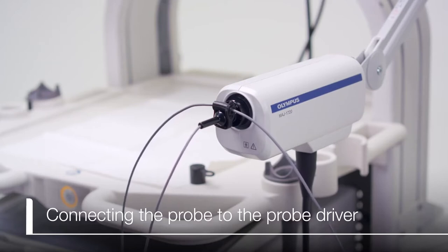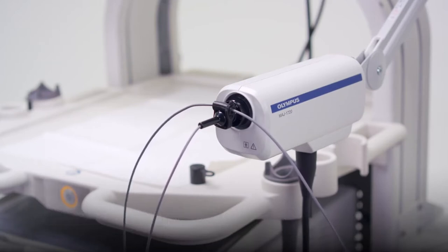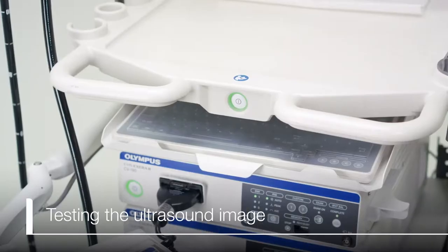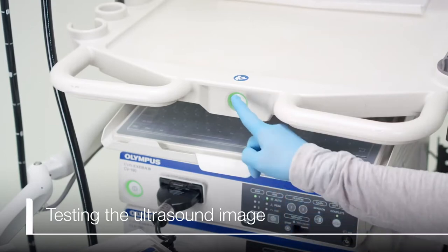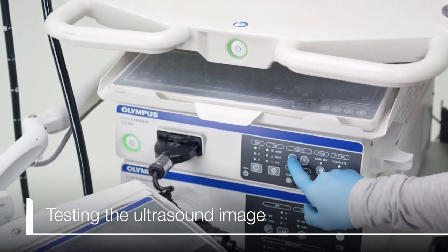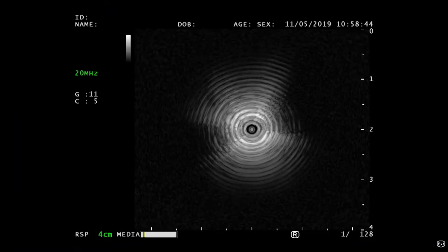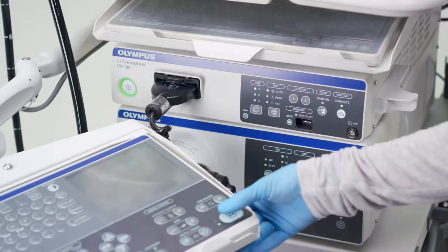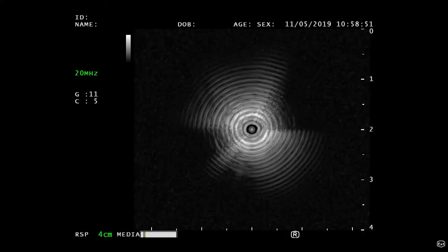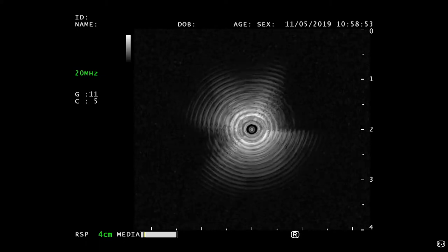Also, do not rotate the probe while inside the probe driver as it will damage the contact pin and possibly the probe driver. With the display monitor, ultrasound center, and tower on, press custom 1 on the CV190 to select the ultrasound image. Press the freeze button to unfreeze the ultrasound image. Confirm that the probe image is displayed on the monitor.